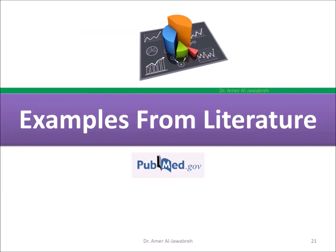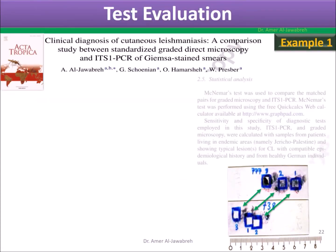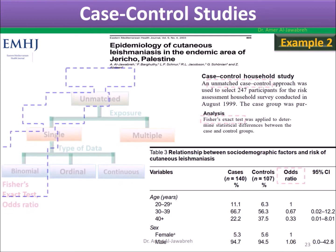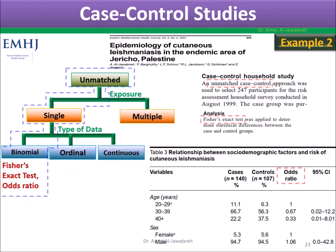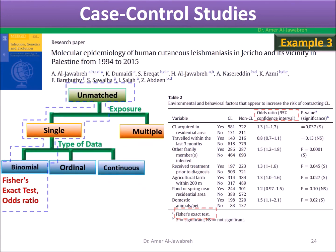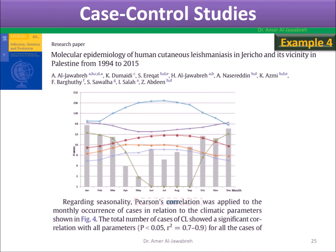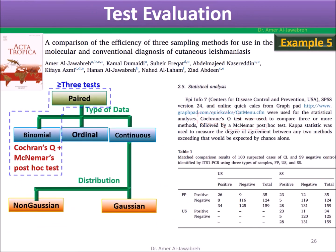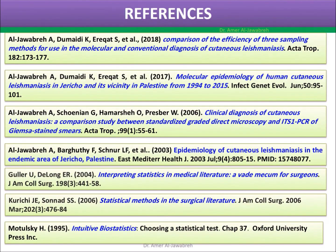Examples from literature include: Example 1 using McNemar's Test; Example 2 using Fisher's Exact Test; Example 3 using Fisher's Exact Test and Odds Ratio; Example 4 using Pearson's Correlation; Example 5 using Cochran's Q and McNemar's post-hoc test; and Example 6.